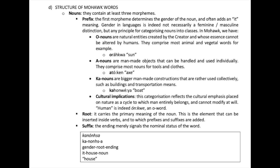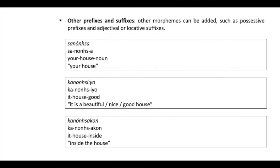The root carries the primary meaning of the noun — the element that can be inserted inside verbs. The suffix merely signals the nominal status of the word. For example, in 'garnon-sha,' we have the gender prefix 'ga,' the root 'non-sha,' and the noun ending 'a.' Other prefixes and suffixes can be added: the possessive prefix 'xha' gives 'your house'; the adjectival suffix 'iyo' (meaning good) gives 'a beautiful house'; and the locative suffix 'agung' (inside) gives 'inside the house.'